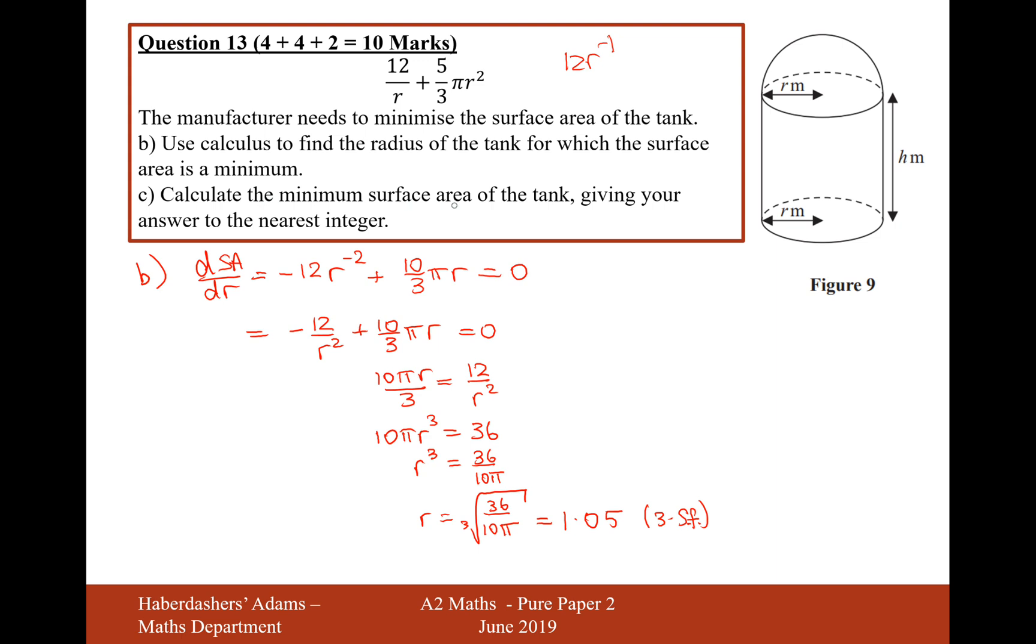There we are, that's the value of the radius. And part c is calculate the minimum surface area of the tank, giving your answer to the nearest integer. Using the answer button, let's type this into the surface area. So for part c,